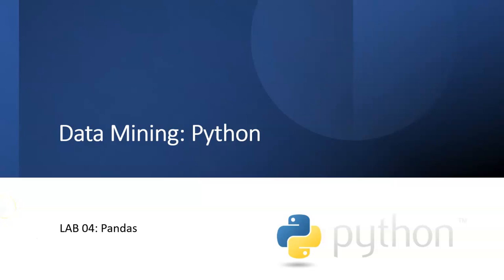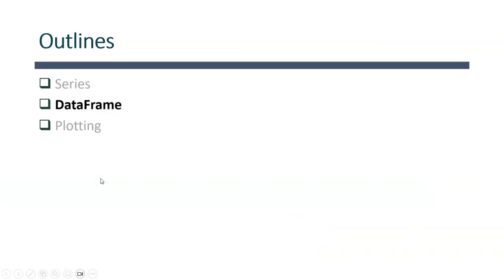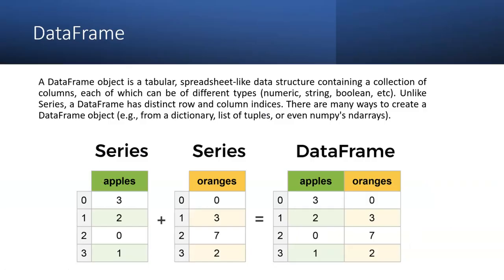Today we will discuss the pandas library in Python, covering its different features and common mistakes made while coding. One of the most important features in the pandas library is the DataFrame. We'll look at how the DataFrame is different from other data structures like numeric values, strings, boolean values, dictionaries, lists of tuples, or n-dimensional arrays.